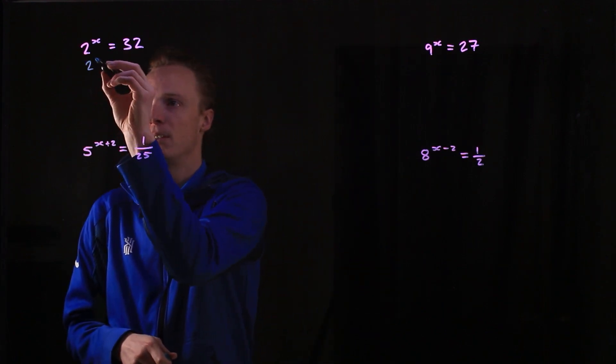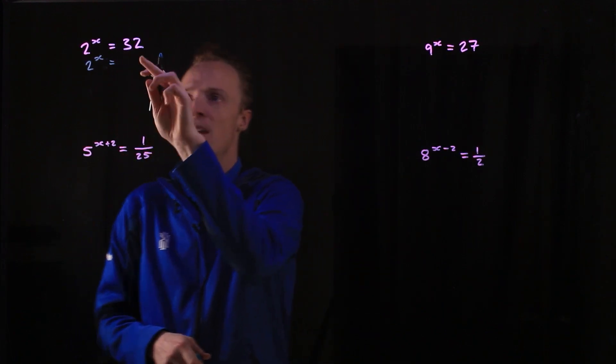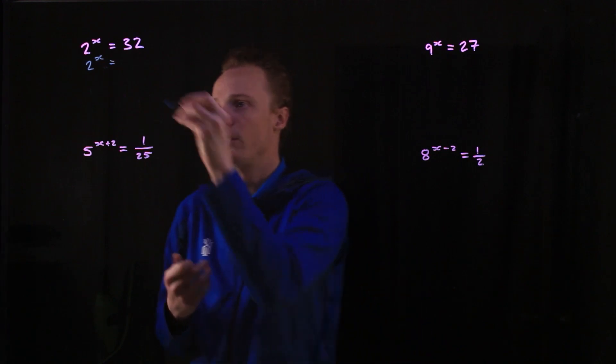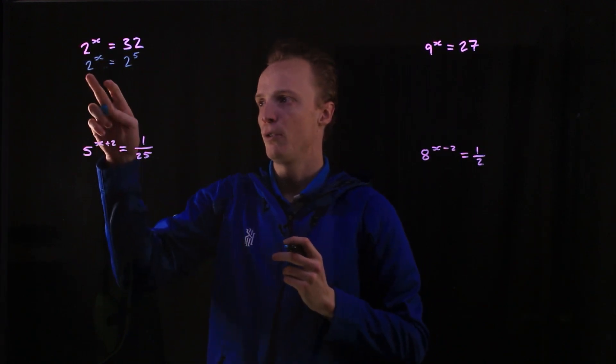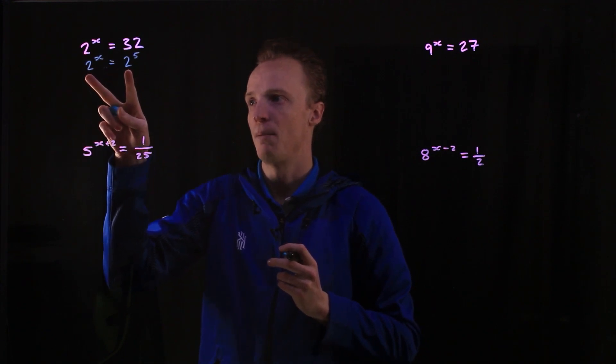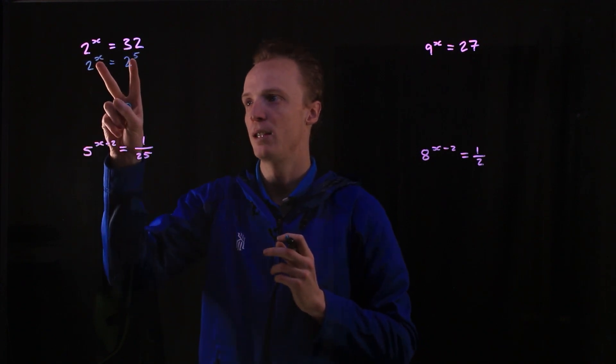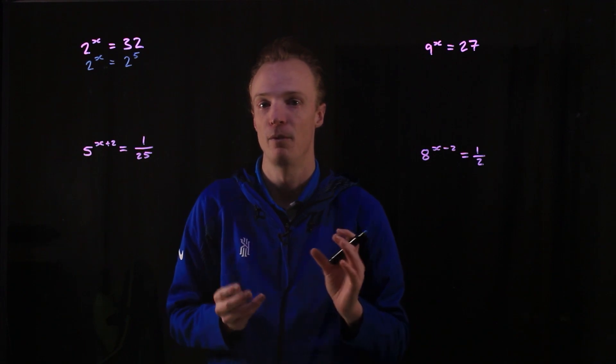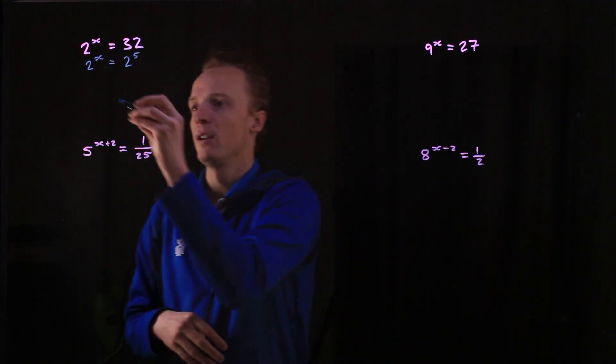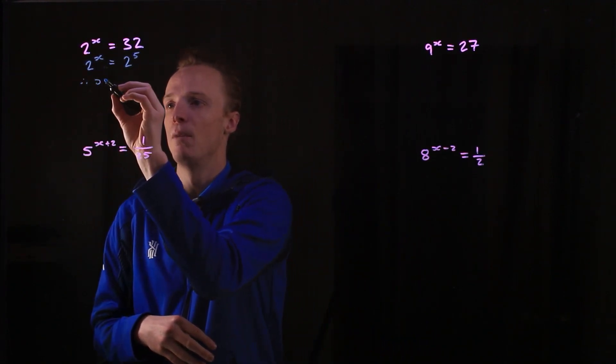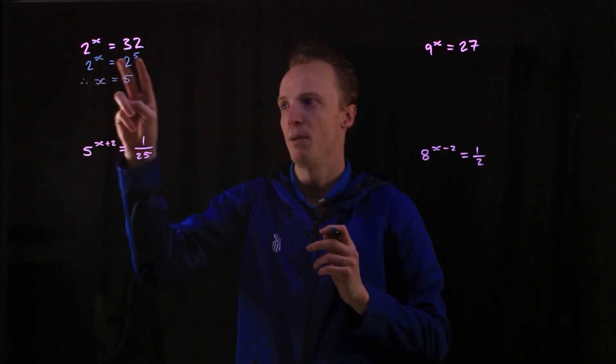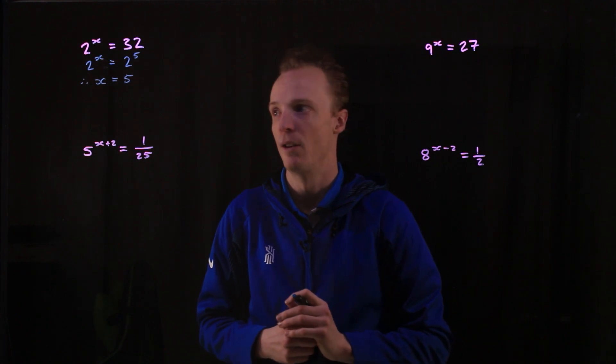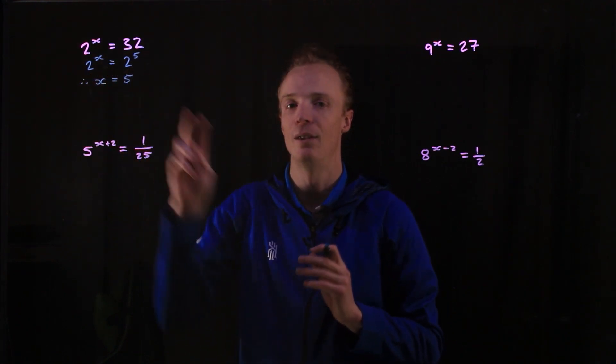So for example, this is still 2 to the power of x, and 32 is the equivalent of 2 to the power of 5. Now because I've got two bases of the same, what it means is the two exponents now have to be the same for this to be true. So what I can therefore say here is my x must be equal to 5. These two exponents must be equal to each other when the two bases are the same.